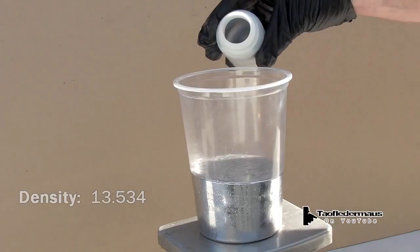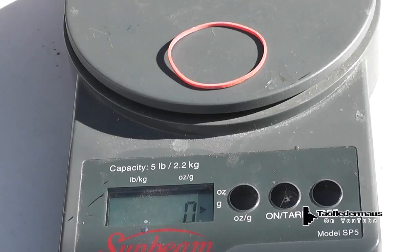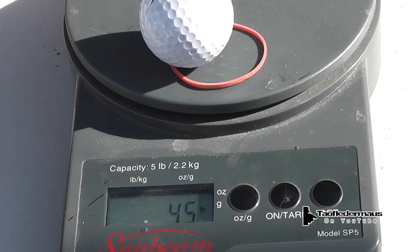We'll be using an ordinary golf ball. Let's weigh it just to give you an idea of how much it weighs. It's about 45 grams, or if you're in the United States, 1.6 ounces.